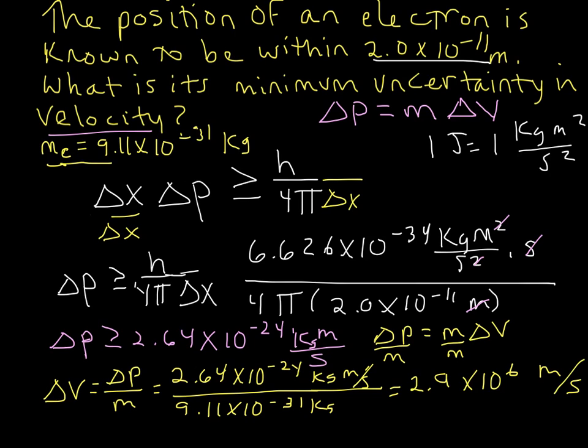That is our uncertainty in velocity when we know the position to within 2.0 times 10 to the negative 11 meters. So this is our final answer.